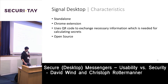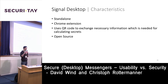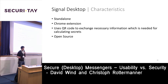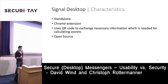How does Signal Desktop work? The main difference between Signal Desktop and WhatsApp Web is that Signal Desktop is a standalone application. You need Chrome, but you can send messages without the smartphone being online — the identity keys are on your phone, but I'll explain this later.